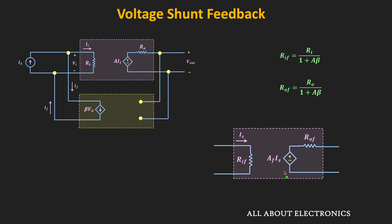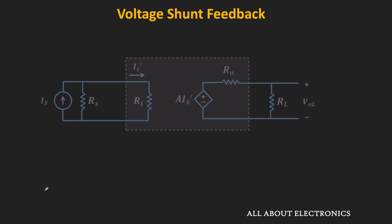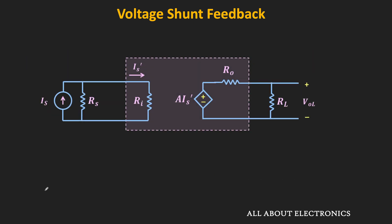The reduction in both input and output impedance is a desired thing for the trans-impedance amplifier. In the trans-impedance amplifier, when we connect the current source as an input, it will also have some source resistance. We want the maximum current to reach the amplifier, which happens when Ri is much less than Rs. If the input impedance is much less than the source resistance, the maximum current flows through Ri, and Is' is approximately equal to Is. Since the input impedance reduces with feedback, that is a desired thing for the trans-impedance amplifier.